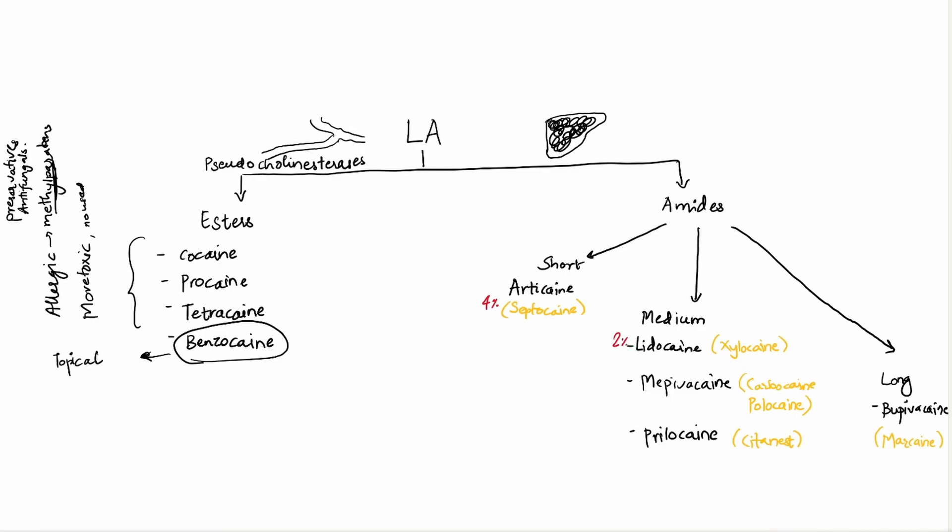Mepivacaine comes in 2% and 3%. And prilocaine is again, it's the medium acting and it's 4%. Bupivacaine or marcaine are the longest acting and it needs very small amounts, which is 0.5%. Since articane is the shortest acting, it needs the highest concentration. Lidocaine, mepivacaine and prilocaine are medium acting. So they need 2, 3 or 4%. Whereas bupivacaine is the longest acting. So it needs the smallest amount of drug available. So it's 0.5%.